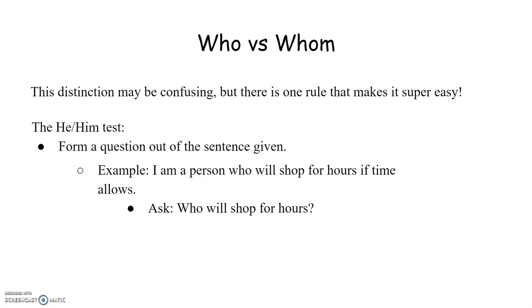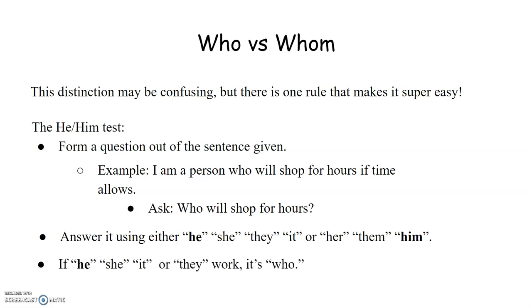Then all you're going to do is answer that question. You're going to answer it using he, she, they, it, or her, them, and him. If you answer it using he, she, it, or they, then your answer is going to be who in the sentence. If you answer your question using him, her, or them, the M's, with the exception of her, just memorize that one, then your answer is going to be whom.